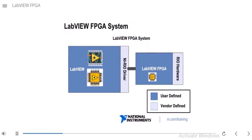If we take a look at the LabVIEW FPGA system and contrast that — looking at the hardware side on the right side of the slide — the real hardware that you're buying, some of it is going to be vendor-defined. However, because you're able to actually program the FPGA chip, which is hardware that exists on the real hardware, you're actually able to define the functionality of the hardware itself. On the software side, there's still a vendor-defined NI RIO driver to communicate between the hardware and the software, but you can also define something on the host side — how that host program works and how it communicates with your customized hardware.